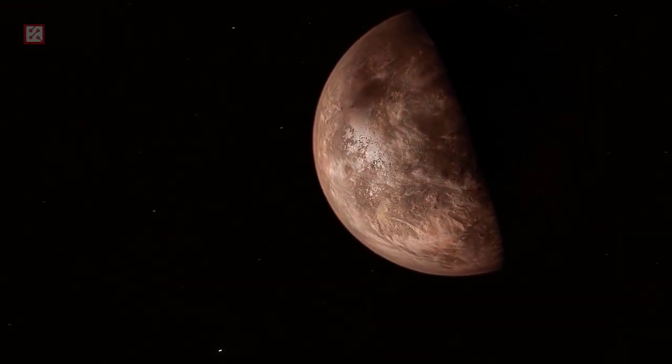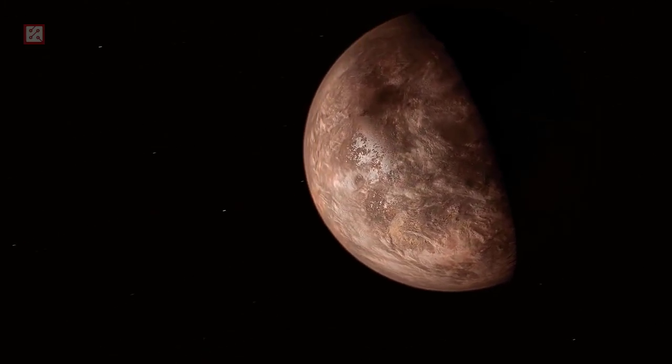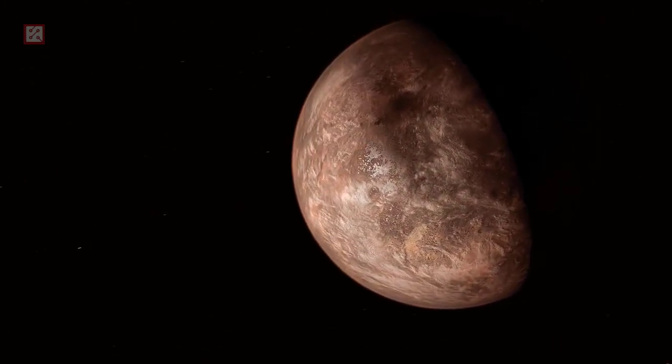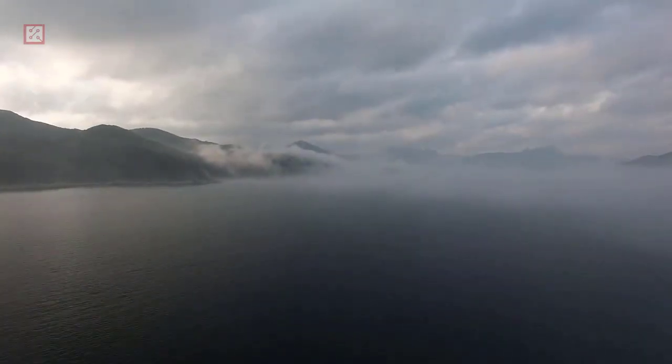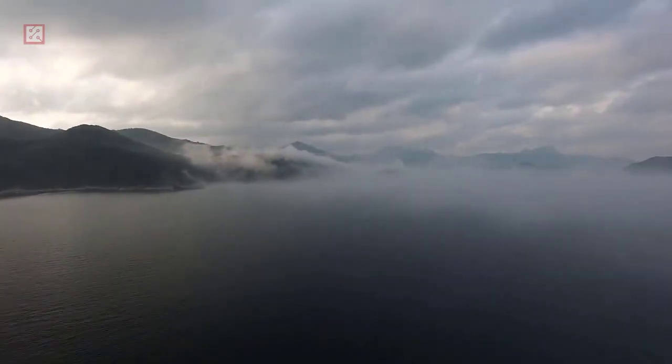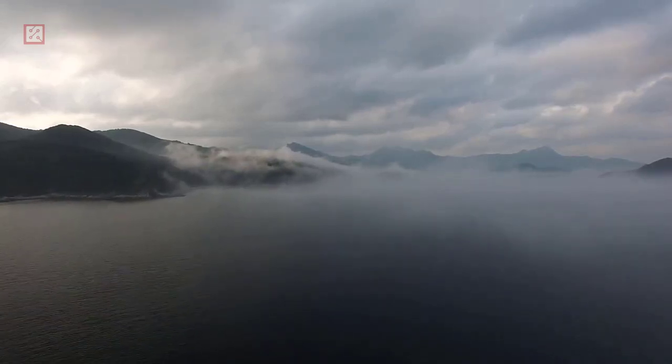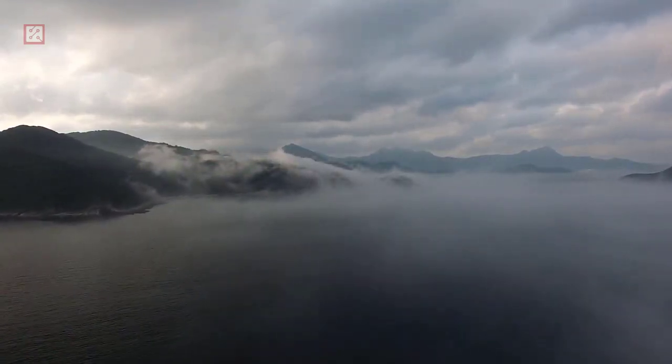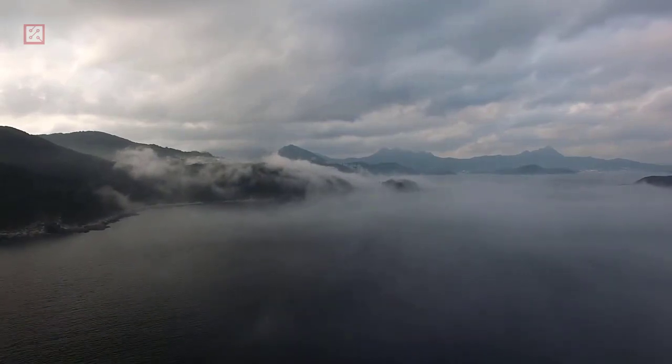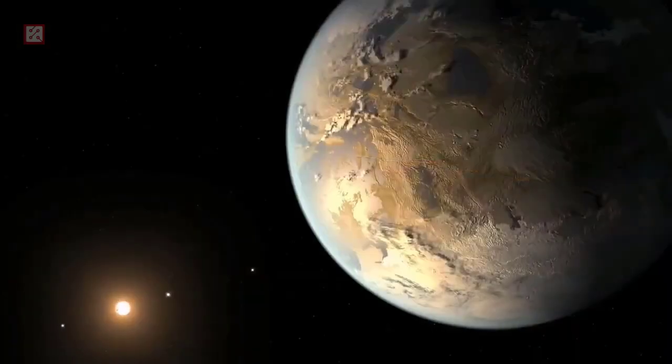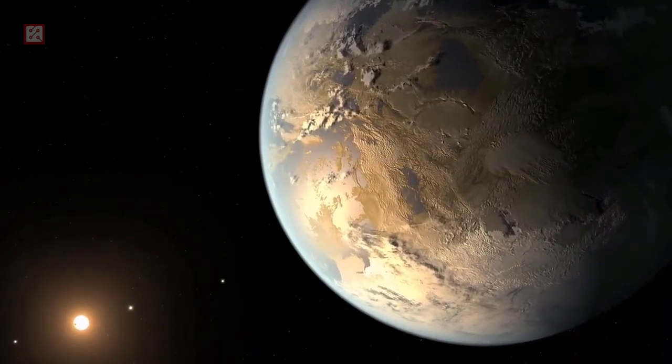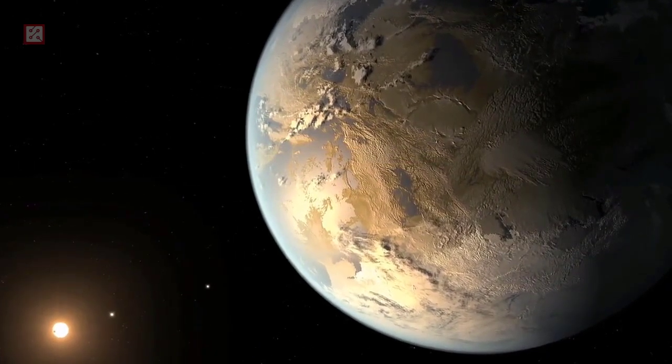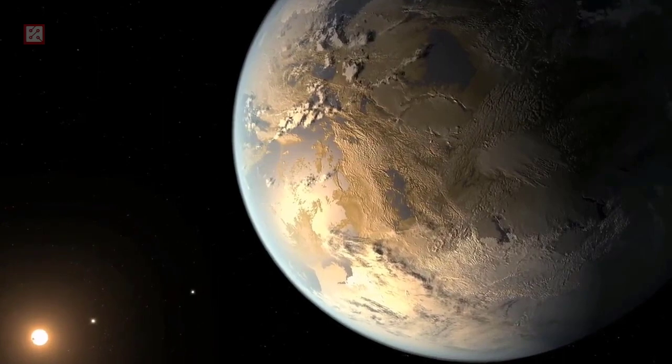The probable mass of Kepler-452 b is 5 times that of Earth, and its surface gravity is calculated as nearly twice Earth's. It is most likely a super-Earth with many active volcanoes due to its higher mass and density. The clouds on the planet would be thick and misty, covering much of the surface as viewed from space. The planet takes 385 Earth days to orbit its star, and the surface temperature is estimated to be at 120 degrees Celsius.